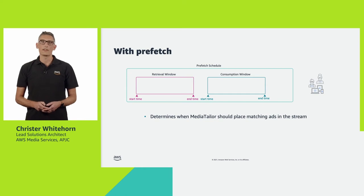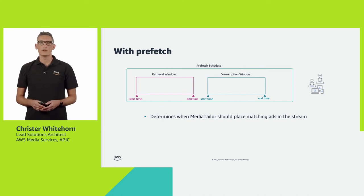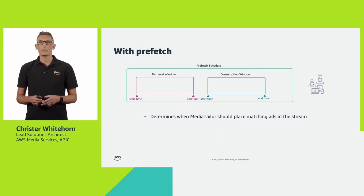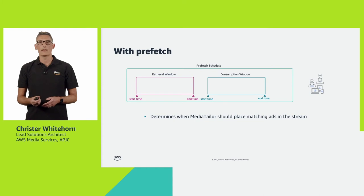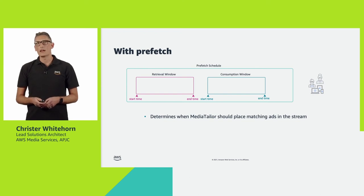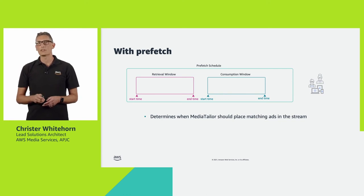The second component to the prefetch schedule is the consumption window. This gives Media Tailor the time range in which to place the ads into the stream. Whilst you're given freedom of where to place your retrieval window and your consumption windows, setting a large gap between the two may impact downstream ad tech platforms which may not accept impression event beacons greater than an hour after the initial ad request. It is also valid to overlap the retrieval and consumption windows and use this as a mechanism to buy an extra few seconds in the ad decisioning time to reduce insertion latency.